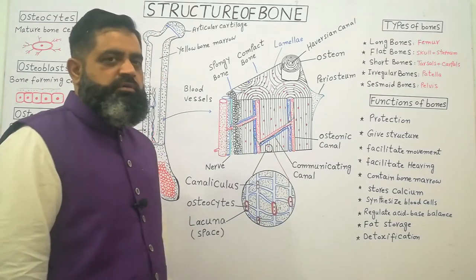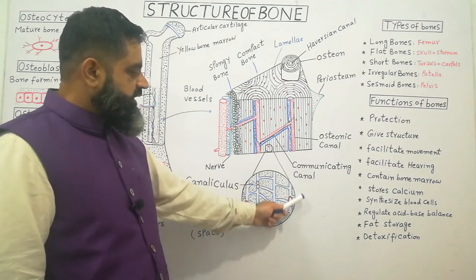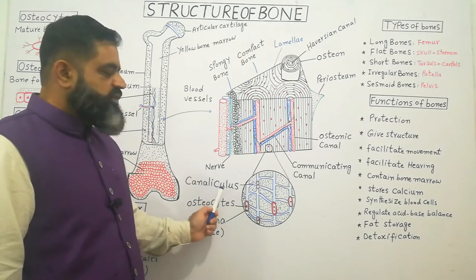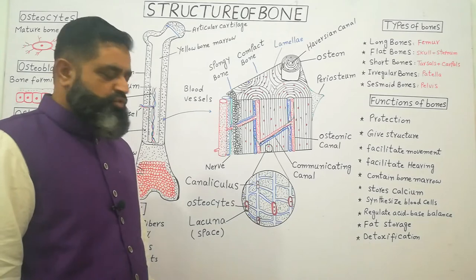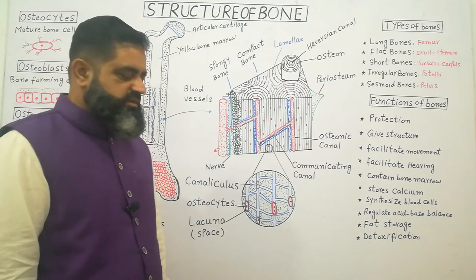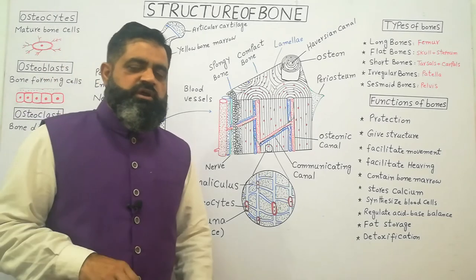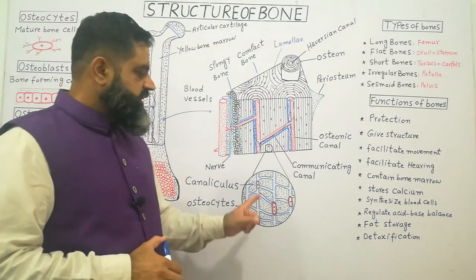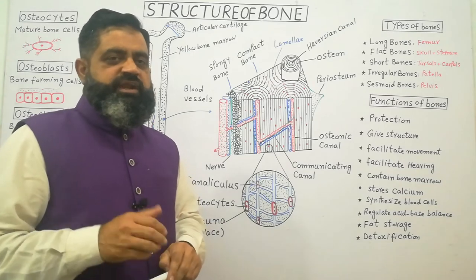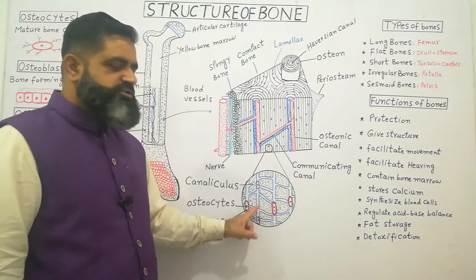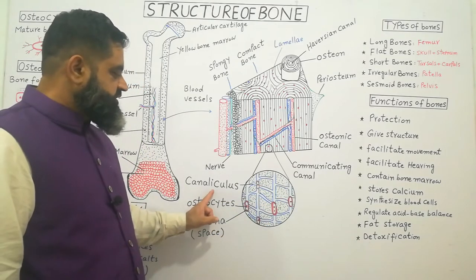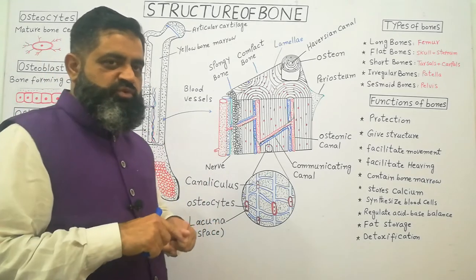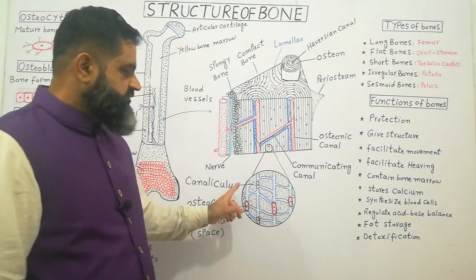In an enlarged cross-section of compact bone, the lamellae contain channels called canaliculi, which house osteocytes — bone cells located in spaces known as lacunae, where they synthesize bone and perform bone functions. The remaining matrix is made up of collagen fiber with deposited calcium phosphate and other minerals. Mineral salts and other nutrients are supplied to osteocytes via blood through these canaliculi.